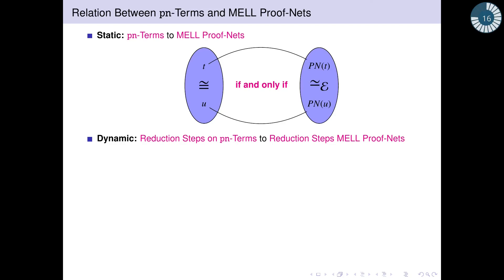Indeed, we show that terms and proof nets are in perfect correspondence by choosing appropriate quotients for them. So there is a quotient on the level of terms and another quotient on the level of proof nets.